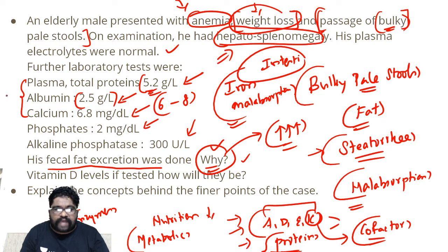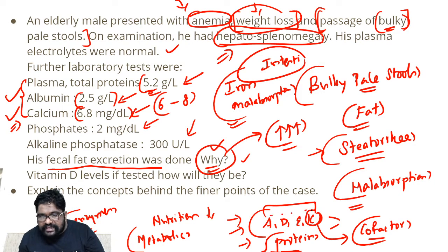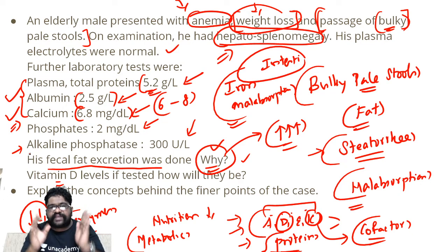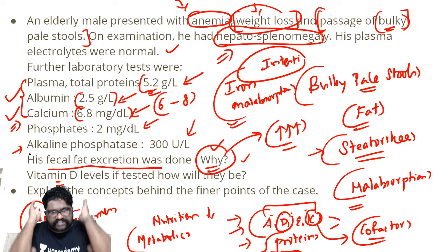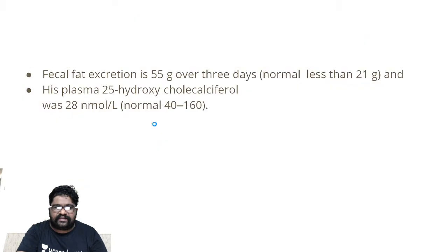Protein is lesser because of poor absorption. Also remember, when albumin levels are lesser, calcium automatically goes down. Calcium is going down because of one more concept: A, D, E, and K — all four can be going for malabsorption. So vitamin D levels are supposed to be less than normal. If I go for alkaline phosphatase, ALP elevation is definitely expected when calcium levels are low.